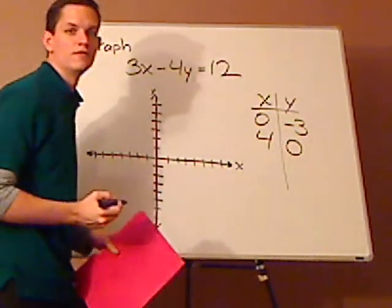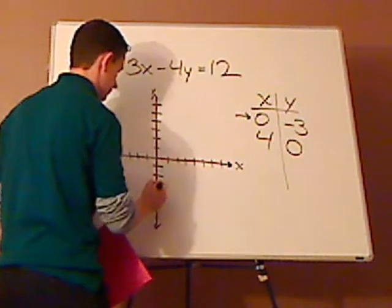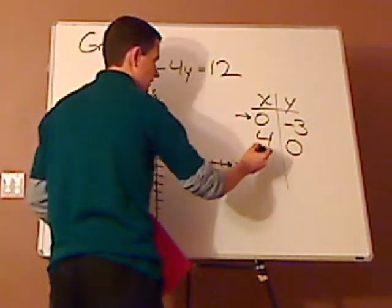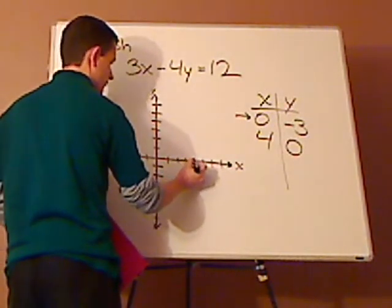You see that? Now you have the y intercept, which is this guy, negative 3. Negative 3 right there. And this is the x intercept, which is at a positive 4.